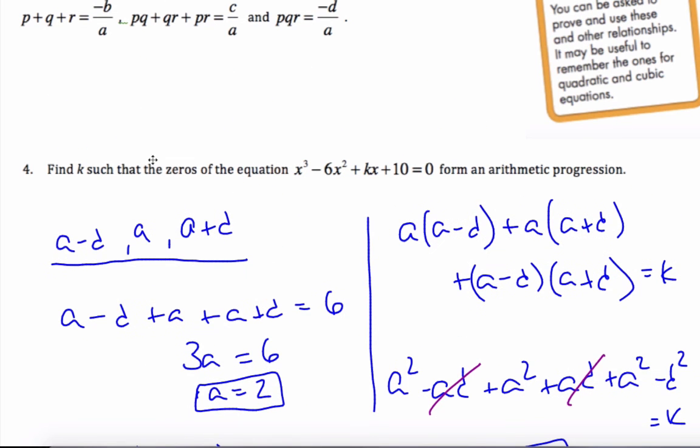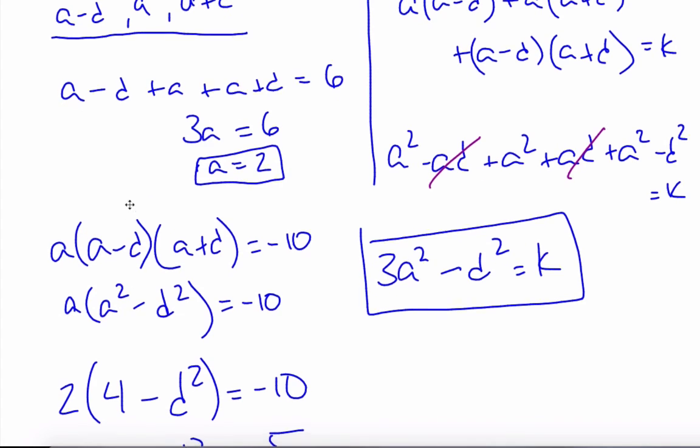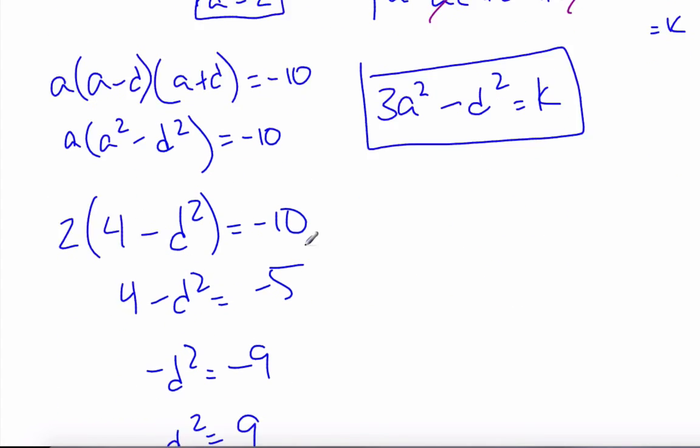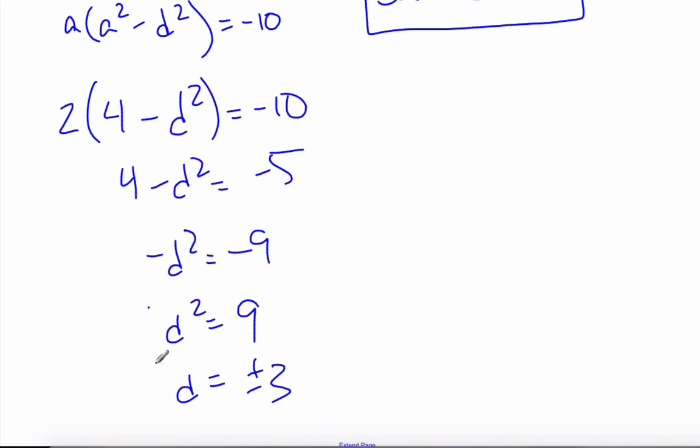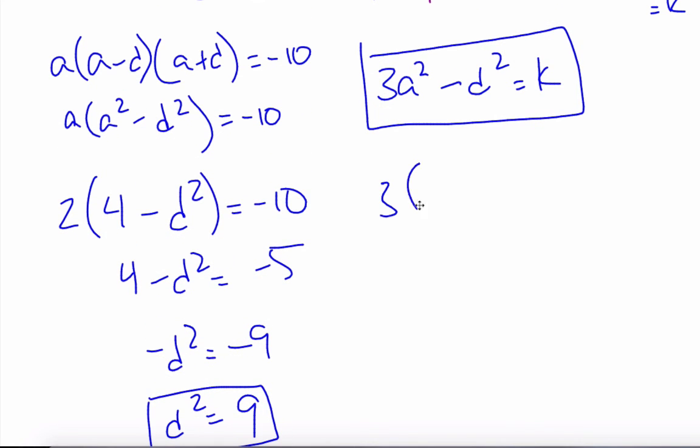And the plus or minus 3 comes from the fact that it's just going to be this one. I just have to take one of the d's, and it will just work itself out. So now I know that, oh, I can say d squared is 9. So I have 3 times a is 2 squared minus 9 equals k. And so I get 3 times 4 minus 9. 12 minus 9 equals k. And so k is indeed 3.